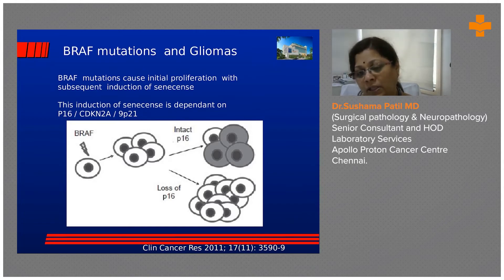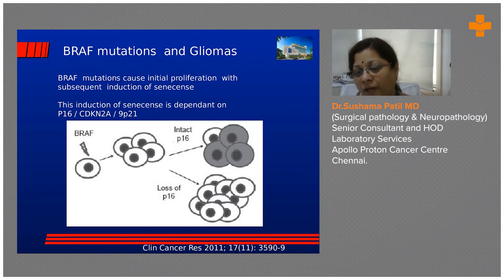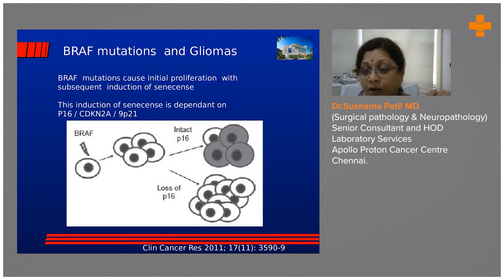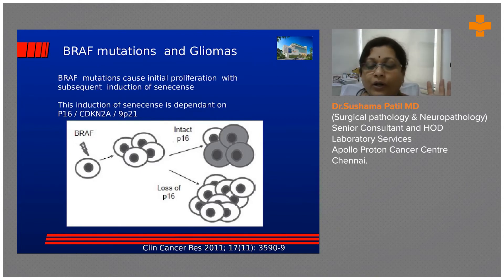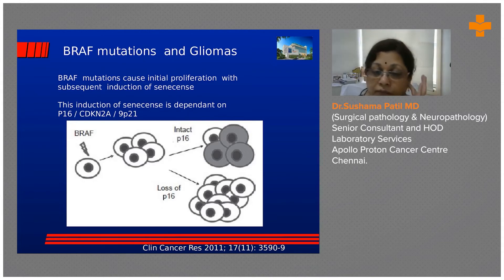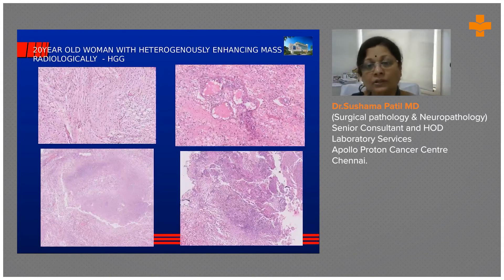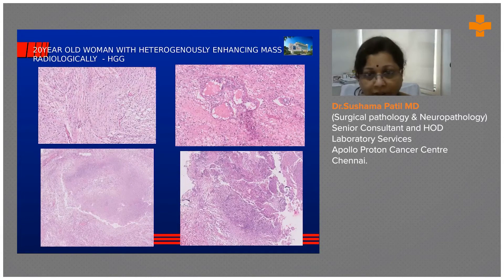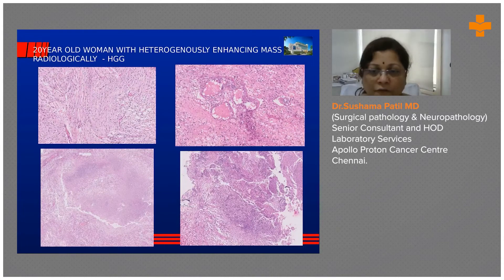These days I am performing p16 immunohistochemistry on all pilocytic astrocytomas I encounter. Another feature that indicates a pilocytic may not behave well is loss of ATRX — routinely ATRX is intact in pilocytic. When we see loss of p16 expression, or a mutant pattern on immunohistochemistry, we start worrying. We warn the surgeons to ensure complete resection and keep a close watch — it may recur. We had one such case: a 20-year-old woman with a heterogeneously enhancing mass radiologically.